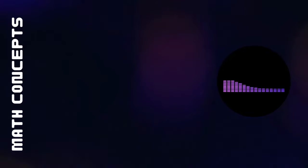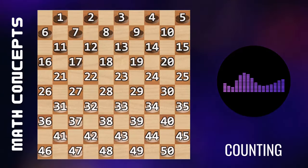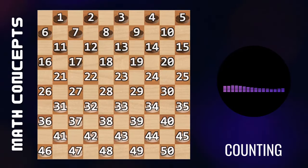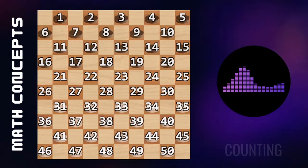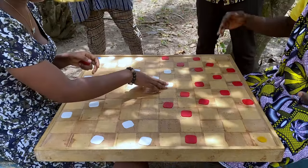Mathematical Concepts: Counting. One of the most basic mathematical concepts used in the game of draft is counting. Players need to count the number of pieces they have on the board as well as the number of pieces their opponent has in order to determine their strategy.